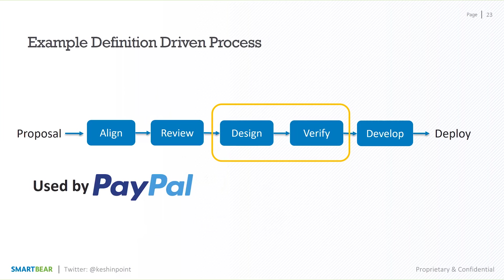A real-life example is PayPal. PayPal has a stringent review process internally whenever a new API is being built. First, they go through an alignment exercise where they look at the business taxonomy and determine where the API fits. Then all internal stakeholders have to sign off. After that, they design the API interface first, and only once the design has been verified with all technology stakeholders do they actually develop and deploy it.